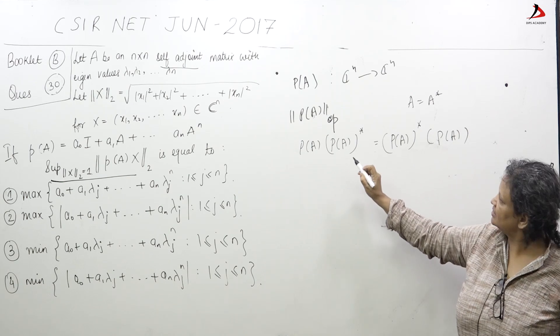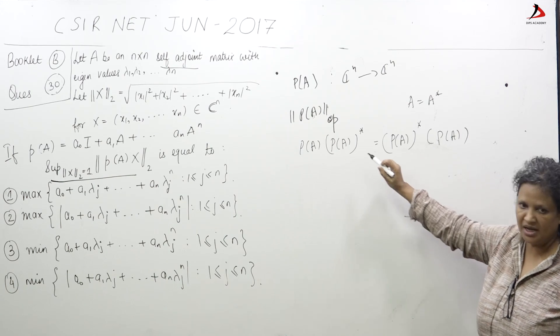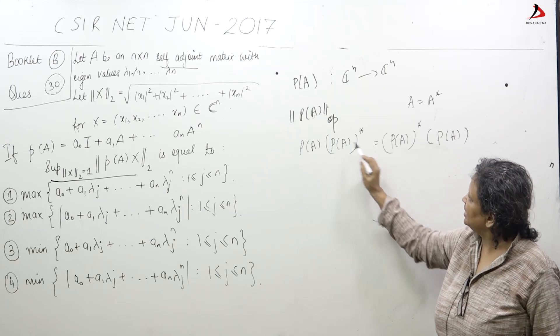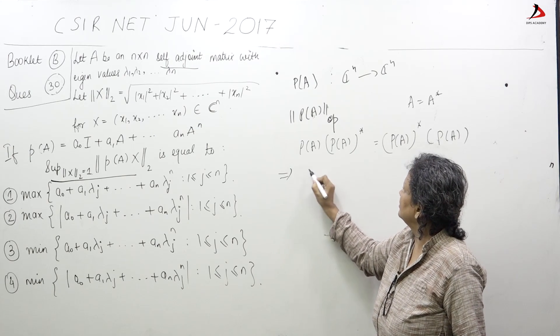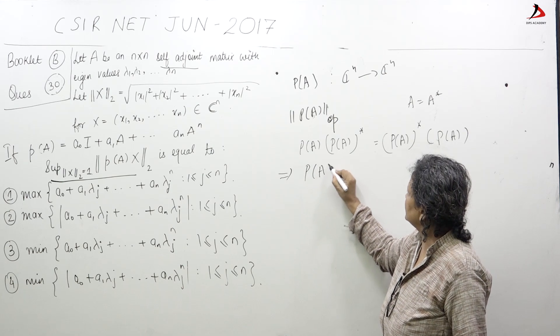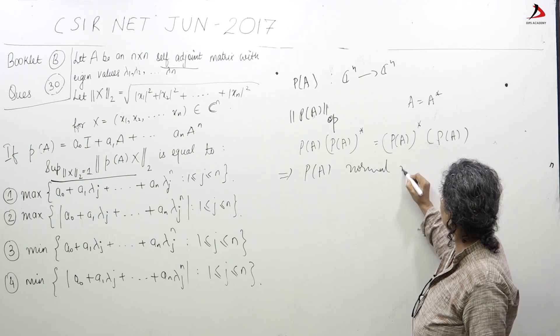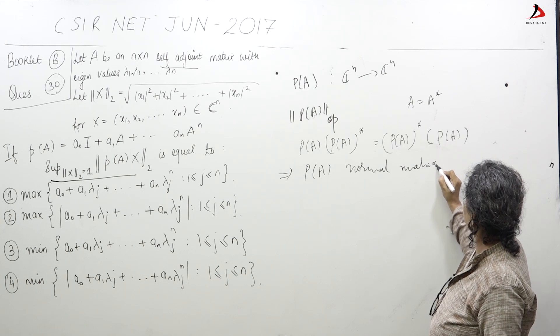One can verify this. This is a polynomial in A, and when you multiply them you see that it is same as this. So this implies P of A is a normal operator, normal matrix or normal operator.